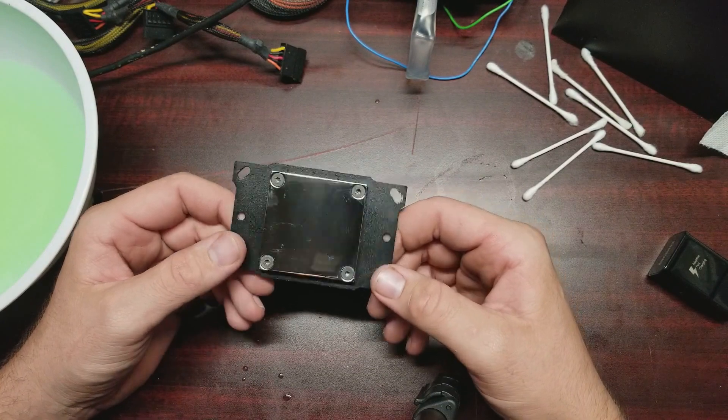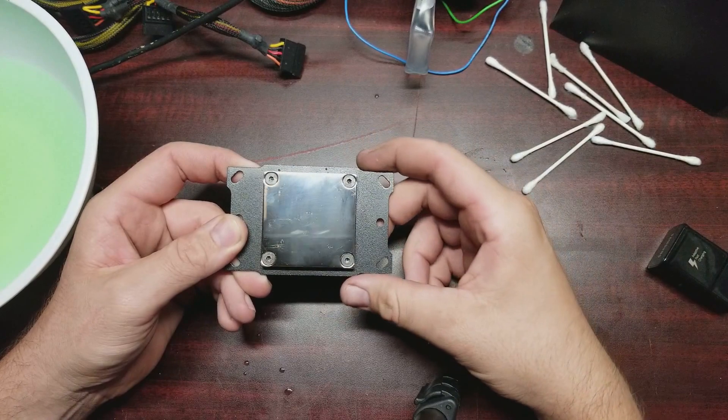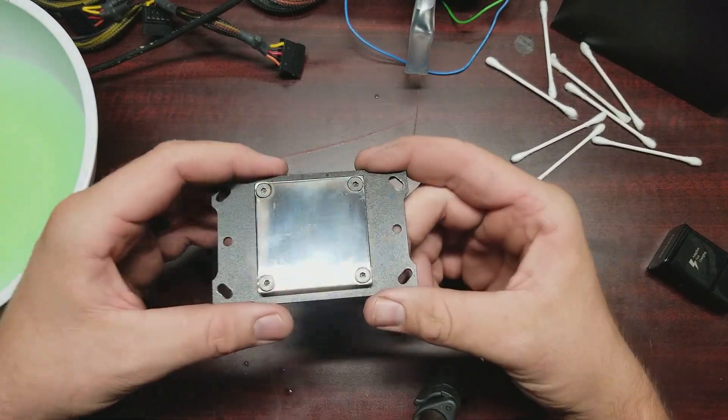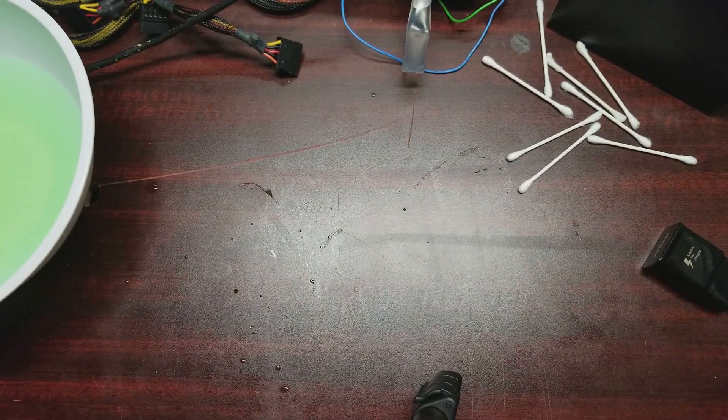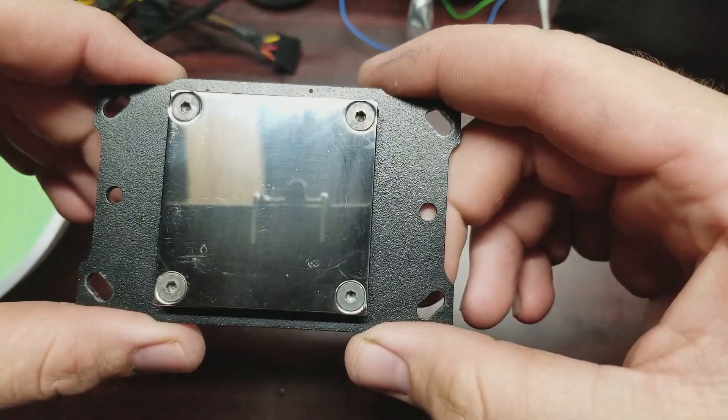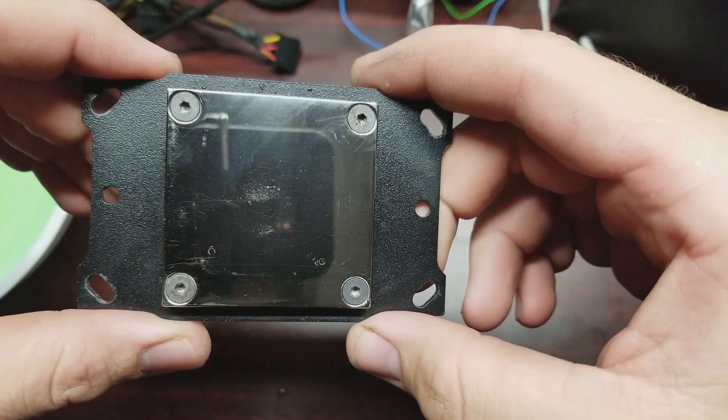So there we have it. That is how to disassemble and clean your EK Water Blocks Supremacy Evo, both for AMD and for Intel. Good thing that these things are solid metal. Because that would have really sucked. But yeah, there you go.